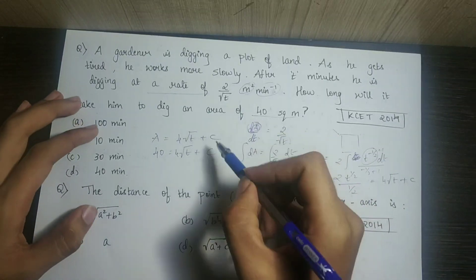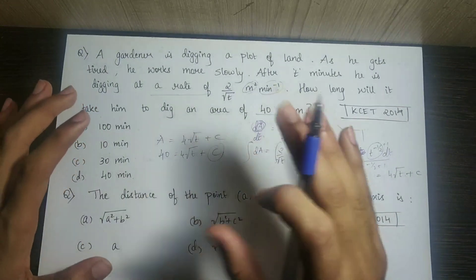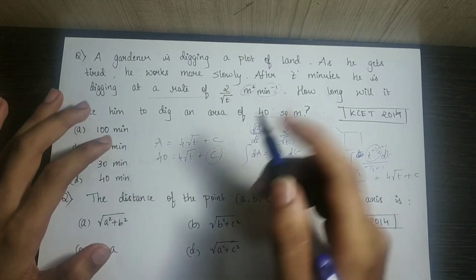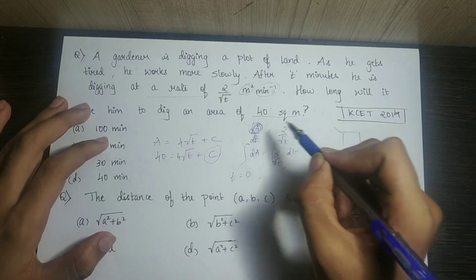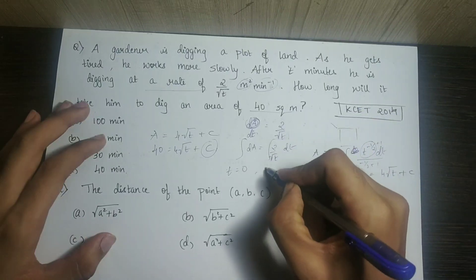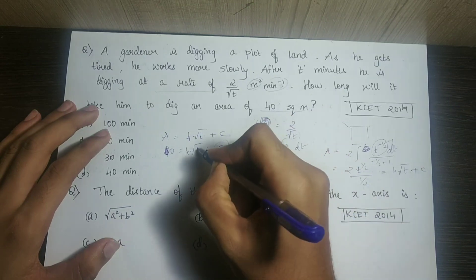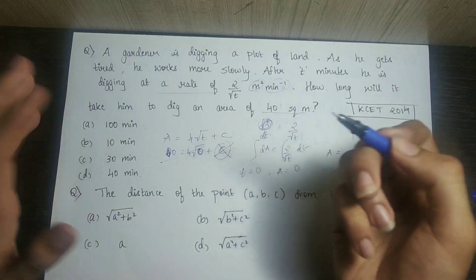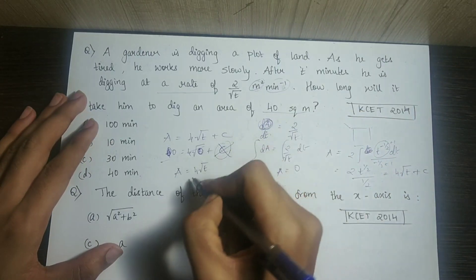Applying the initial condition: at the start, when time equals 0, the area is 0. Substituting A equals 0 and t equals 0, we get 0 equals 4 times root 0 plus C, so C equals 0. The integration constant is 0.